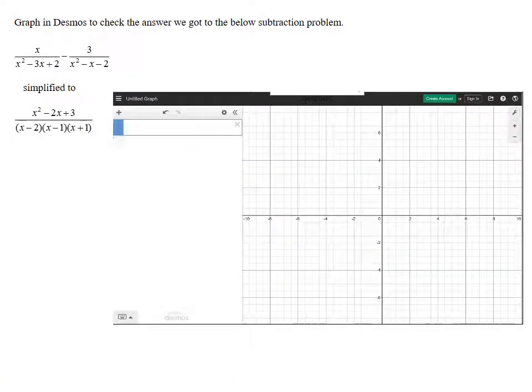So the other way we can check if we have technology available to us is to do the graph of the original problem and then the graph of the simplified result. So I will do one more by using graphs.